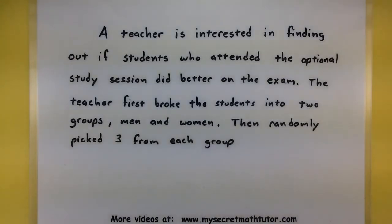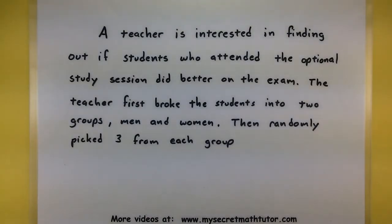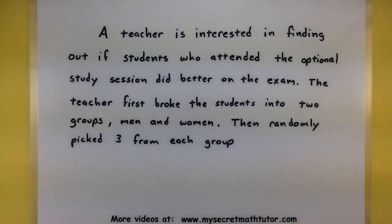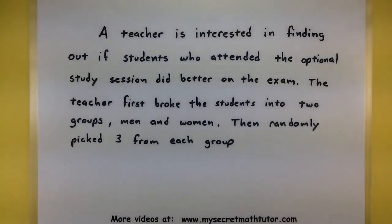In my first example, we have a teacher that is interested in finding out if students who attended the optional study session did better on the exam. The way the teacher is going to find out this information is they first broke the students into two groups — men and women — and then randomly picked three from each group.